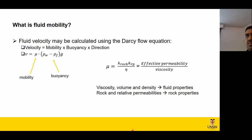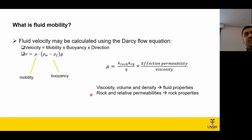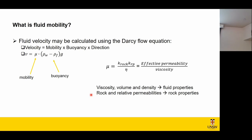What we wanted to do was work this out in a computationally inexpensive and fast way — essentially a flash calculation rather than a discretized model requiring significant computing power. This would answer a question such as: what is the velocity of a particular fluid at a particular depth in, say, a sandstone or carbonate? Surprisingly, a straightforward way of answering this didn't actually exist. Working out the velocity of methane in a sandstone at 1.5 kilometers depth involved complicated equations, which was one of the main motivations behind this work.